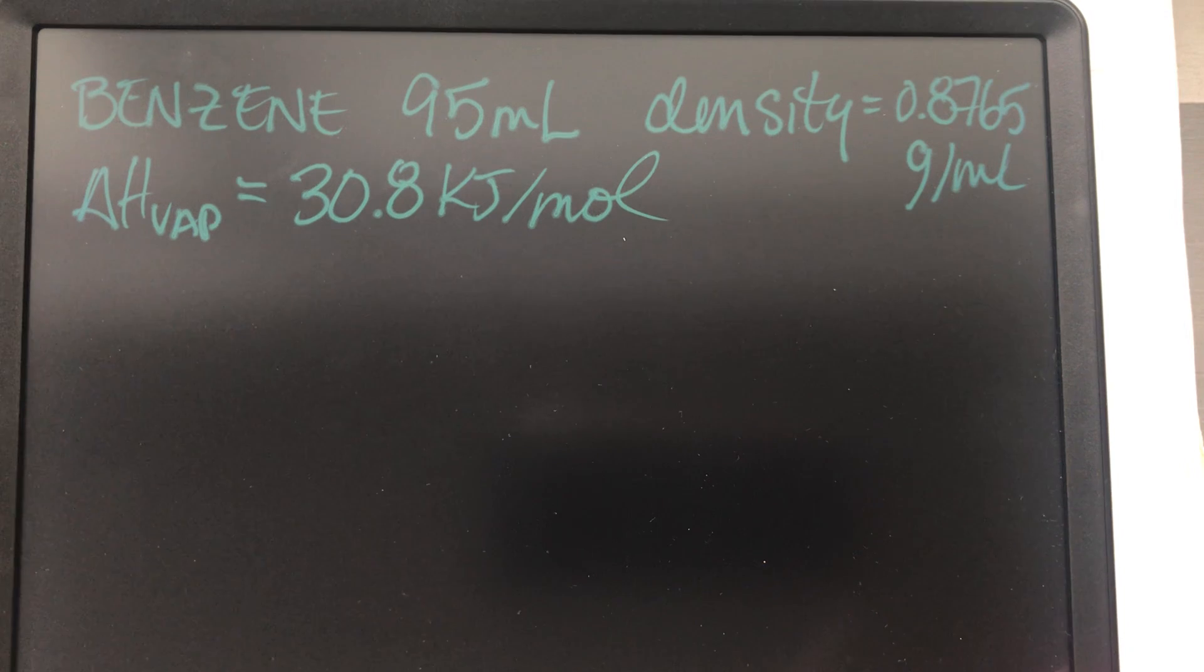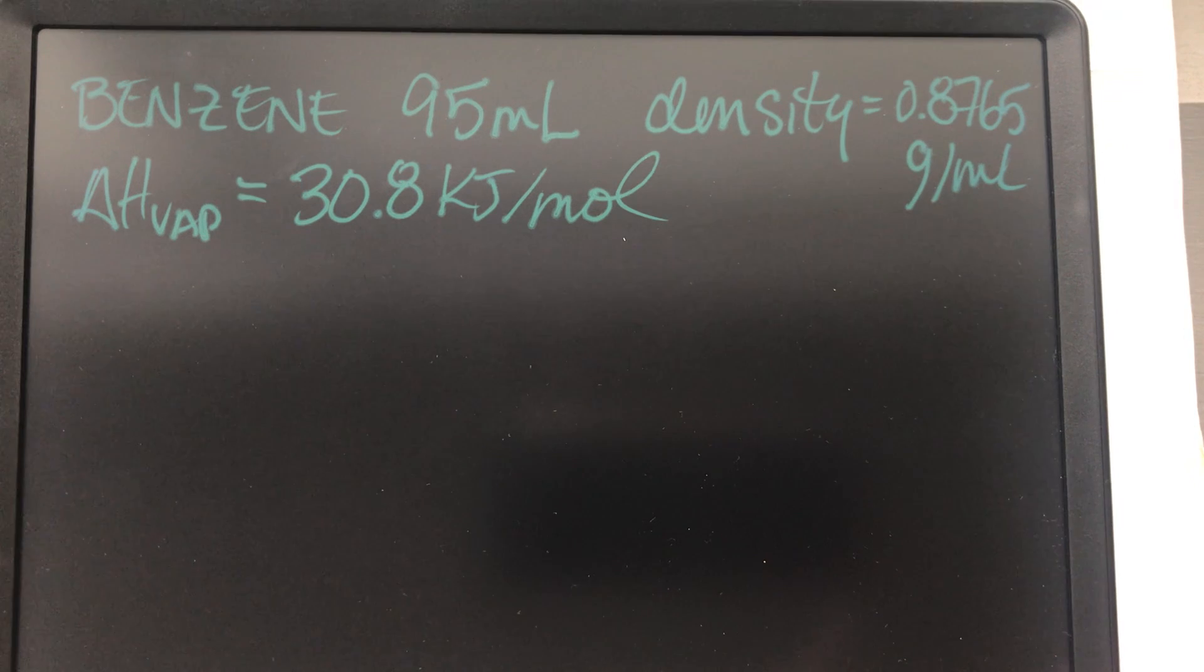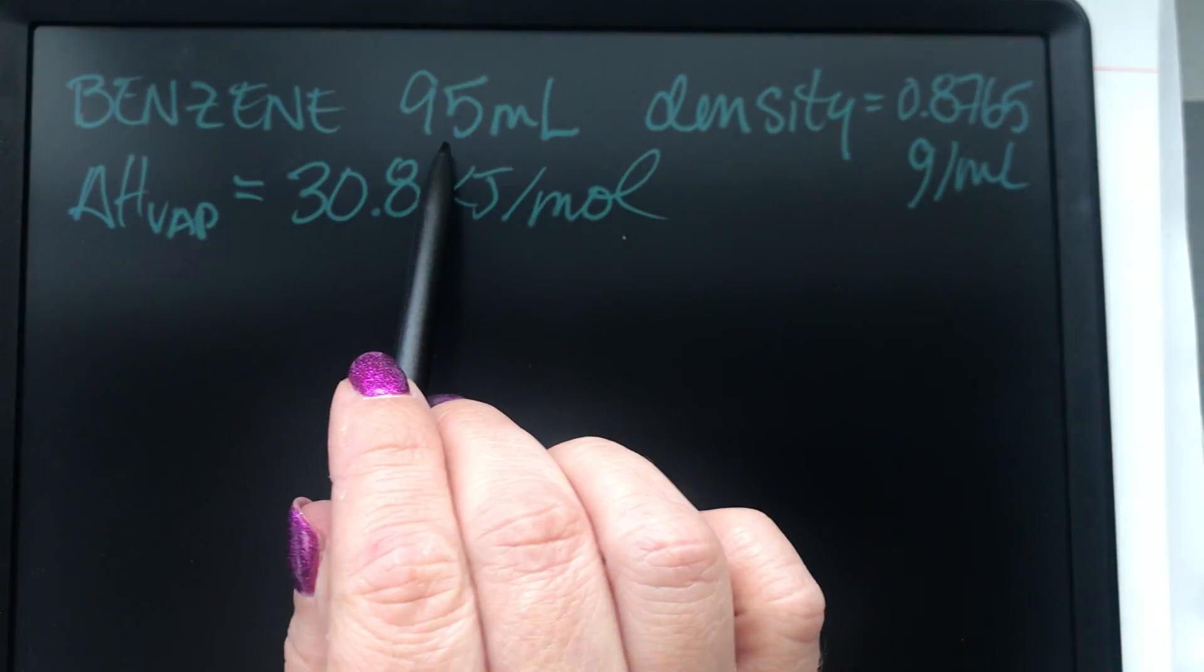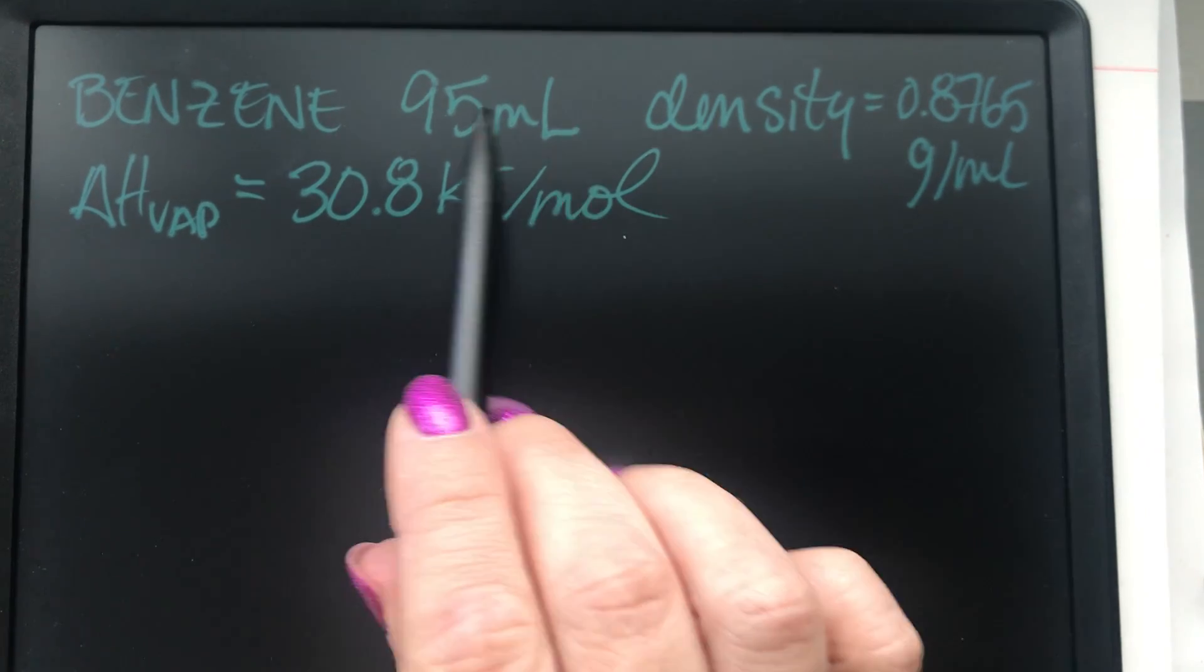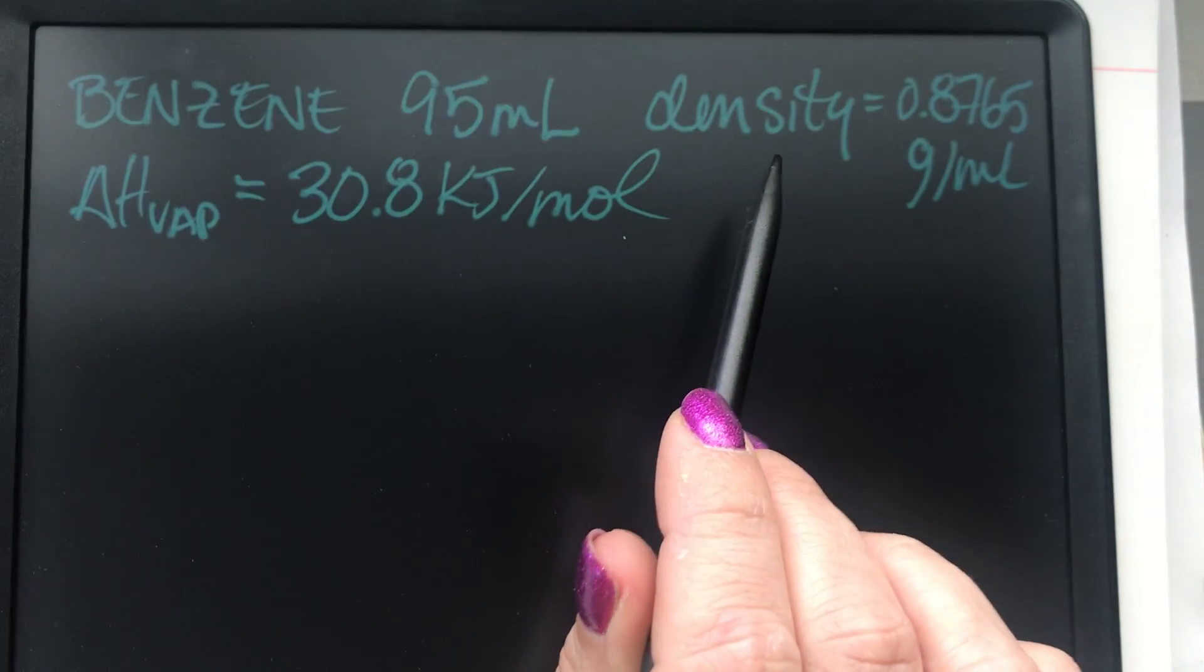All right guys, so in trying to figure out the amount of energy that it would take to vaporize this much of benzene, right, what's the first step that you guys would take? I would go from volume into grams. Exactly, right? So you have a volume of benzene and you have the density of benzene, right? So you need to use these two to get grams.